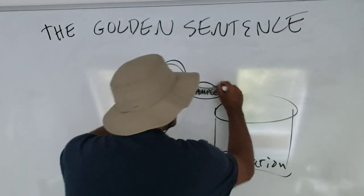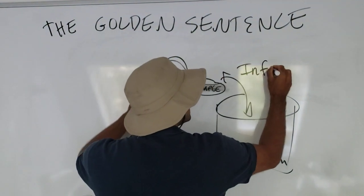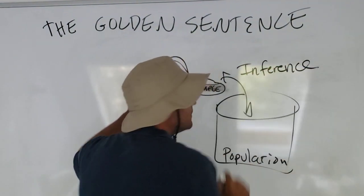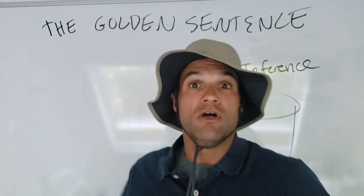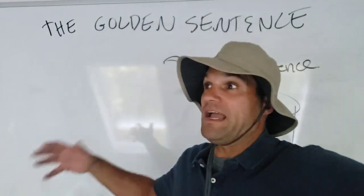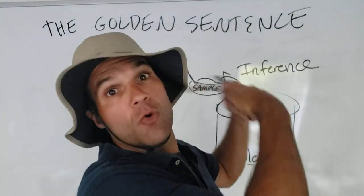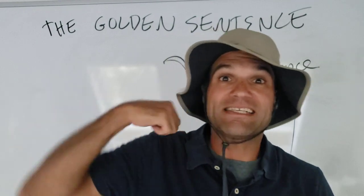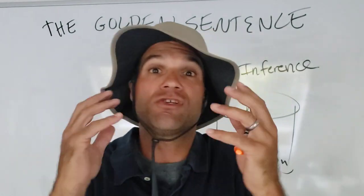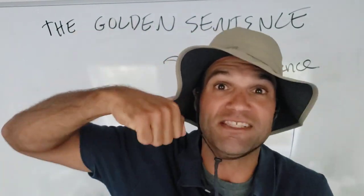That process has a special name — it's called inference. The process of taking a sample, like a handful of codfish or a scoop of the chowder, and using that sample to make an inference about the population. So when I taste the chowder and go, chowder good — that makes me assume, or make an inference, that the big bowl of chowder is good too.